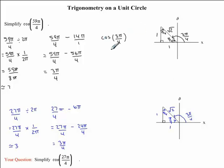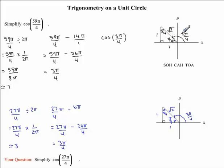Coming back to our question. To find the trigonometric ratio for cos of 3π over 4, there are two things we need to remember: SOH CAH TOA and our CAST rule. According to SOH CAH TOA, cos of an angle is equal to our adjacent side over our hypotenuse side. We're solving for cos of 3π over 4, and we're going to use the related acute angle of π over 4. Our adjacent side is 1, and our hypotenuse is √2, so our trigonometric ratio is 1 over √2.